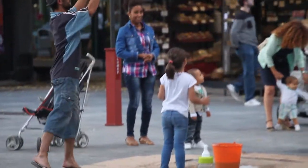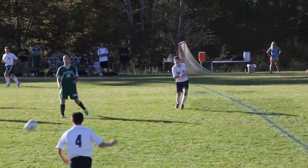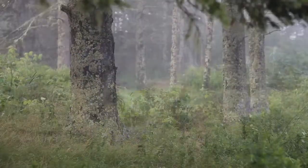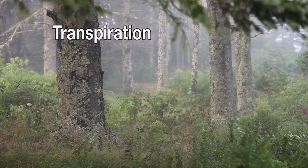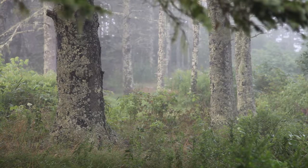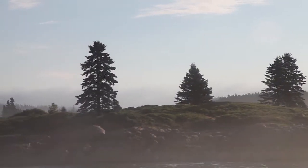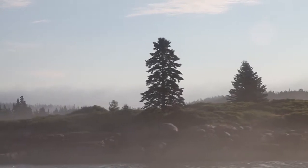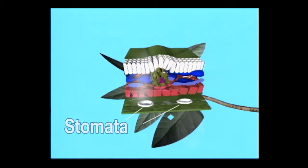Every minute of every day, you're breathing air into your lungs. You're also breathing gases out of your body. Plants also expel water vapor. Transpiration is the process of plants giving off water vapor. Water vapor, along with other gases, such as oxygen, are given off by plants. Gases and water vapor pass in and out of small holes in the leaf, called stomata. Stomata may be opened and closed to control the amount of water in a plant.